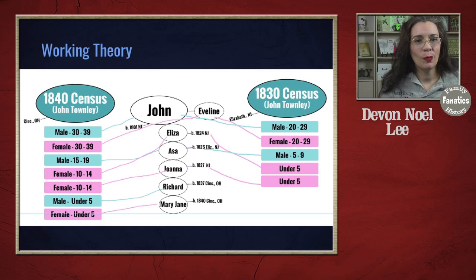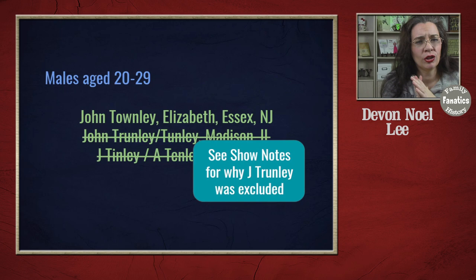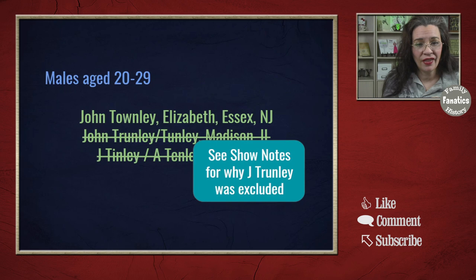If you make a mistake like I did when putting this video together, just stop, start over, and run it again. Right now I have two men in the 20 to 29 range: John from Elizabethtown, New Jersey, and John from Madison, Illinois. But let me go ahead and explore the Johns in the 30 to 39 range and rule them out as well.